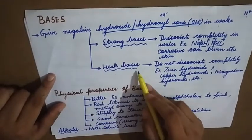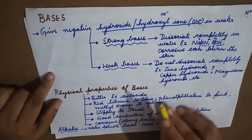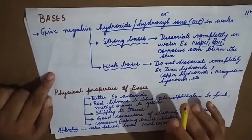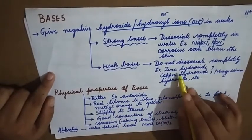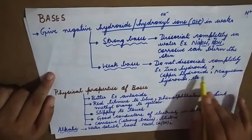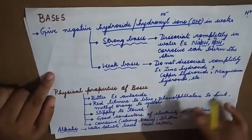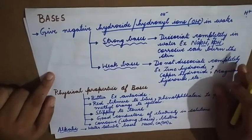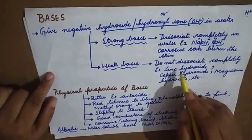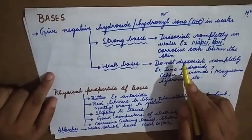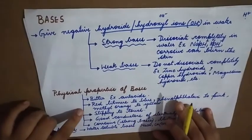Weak bases do not dissociate completely — they do not break down completely in water. Examples are zinc hydroxide, copper hydroxide, and magnesium hydroxide. These are weak bases and they are not corrosive — they do not cause damage unlike strong bases.